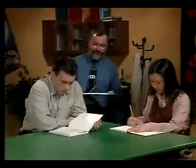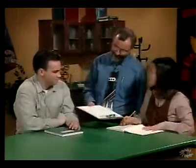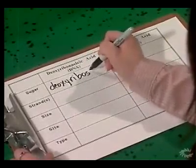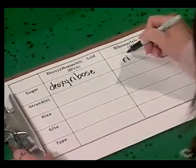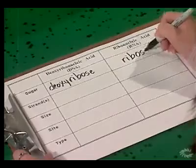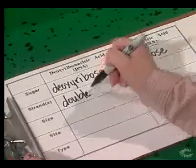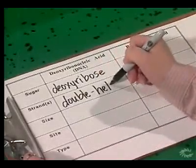Are you ready to compare DNA and RNA? You can use this chart. Under DNA, the sugar — we have deoxyribose as part of their nucleotides. And for RNA, we have ribose sugar. Next to the strands, put double helix for DNA. And RNA is a single strand, so put single.